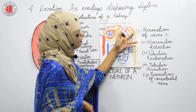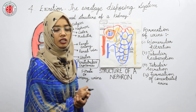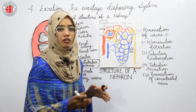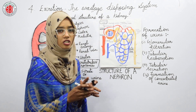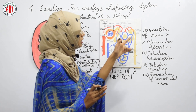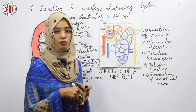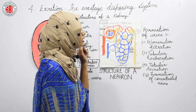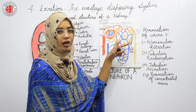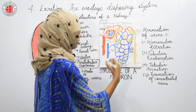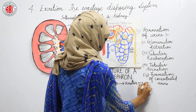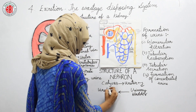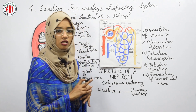From the loop of Henle, the fluid reaches the distal convoluted tubule, where 10% of the filtrate is processed and waste products — urea, uric acid, and ammonia — are secreted. After this tubular secretion, the urine is formed and passed to the pelvis region. From the pelvis, it reaches the ureter, then passes into the urinary bladder, and finally reaches the urethra, from which urine is passed out of the body.